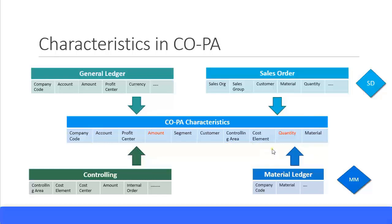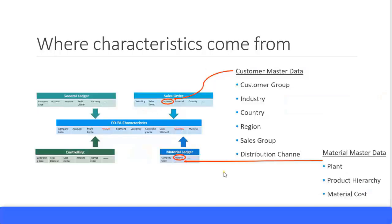Numbers and values such as amount and quantity are called value fields, and these value fields are reported by creating value fields in the COPA tables. You should know where the characteristics are derived from. For example, in your sales order, when you enter your customer master, the characteristics are pulled inside your sales order. Similarly in the material ledger, information is pulled from the material master data.